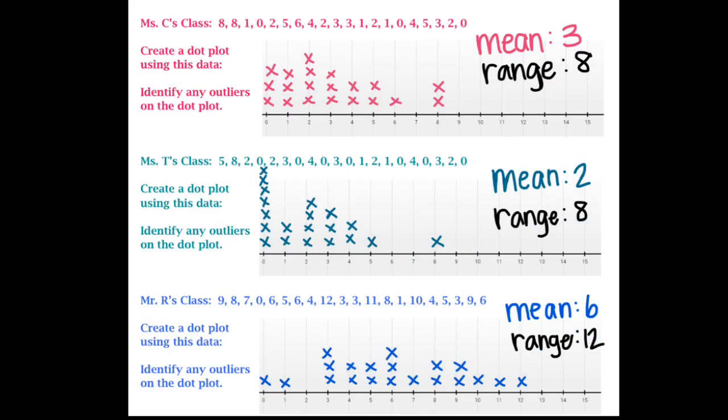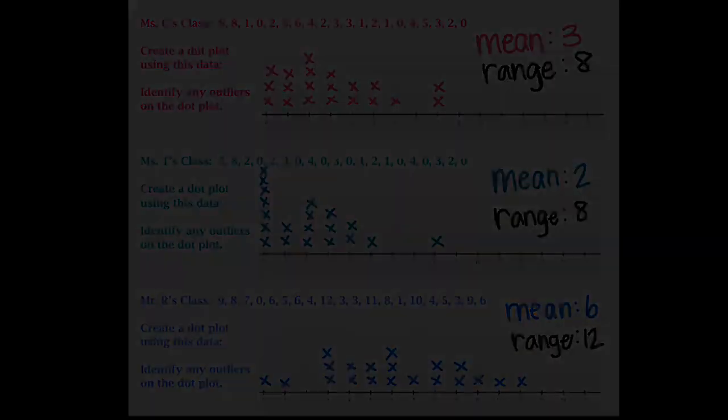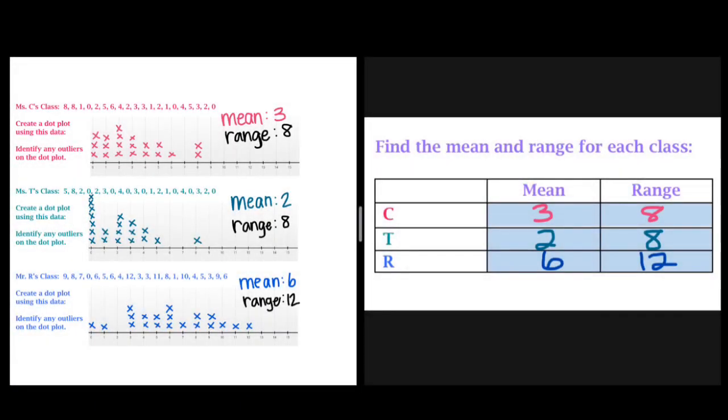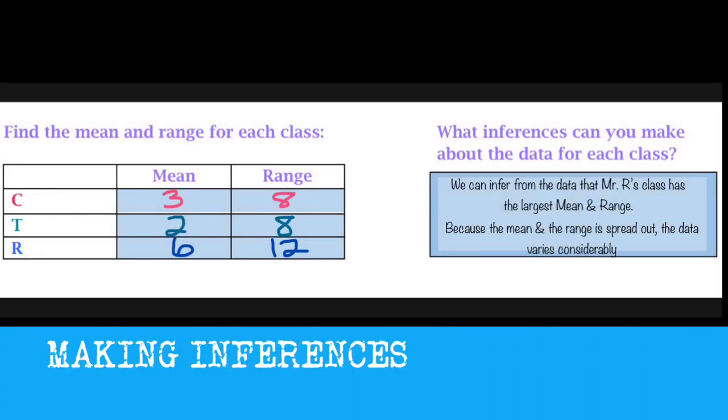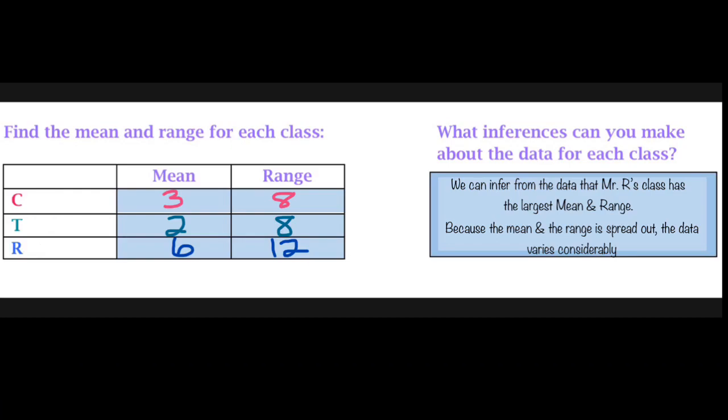Now we're going to fill in all the data we found, the mean and the range, for each one of the classrooms into a table, so that we can compare each of the classes to each other. Here's everything that we found earlier. And we can actually look at this and infer that Mr. R's class has the largest mean and range. And there's some variability there with a range of 12 and a mean of 6.